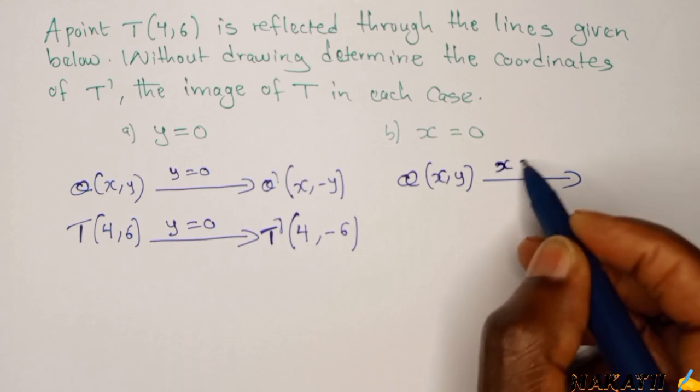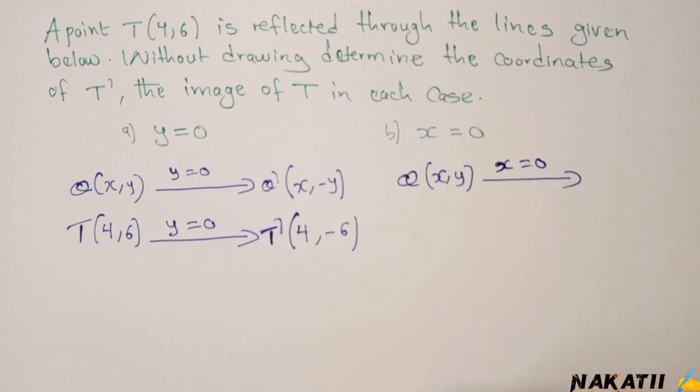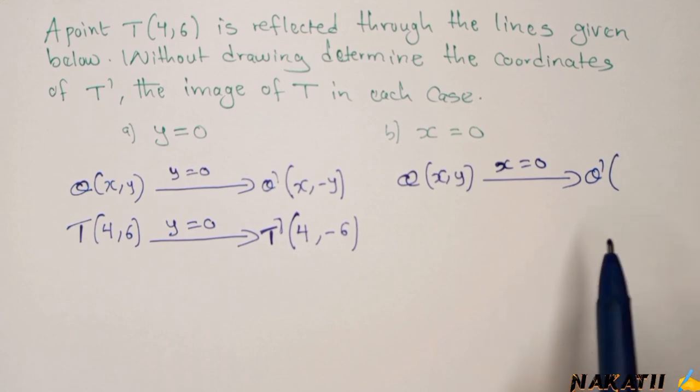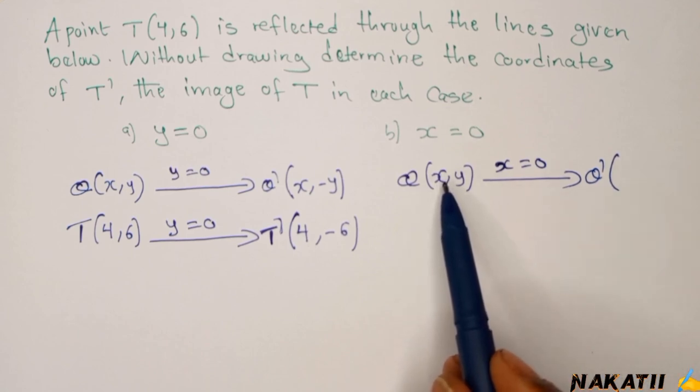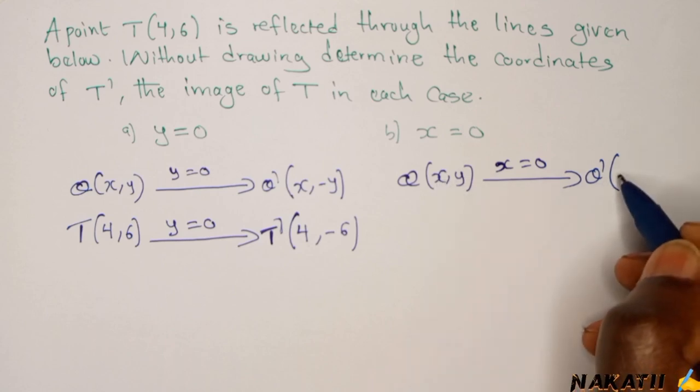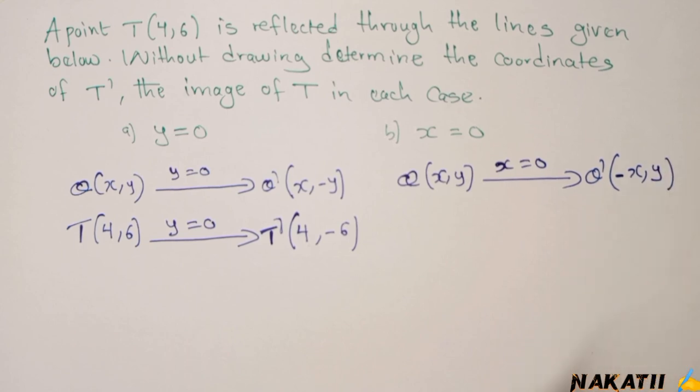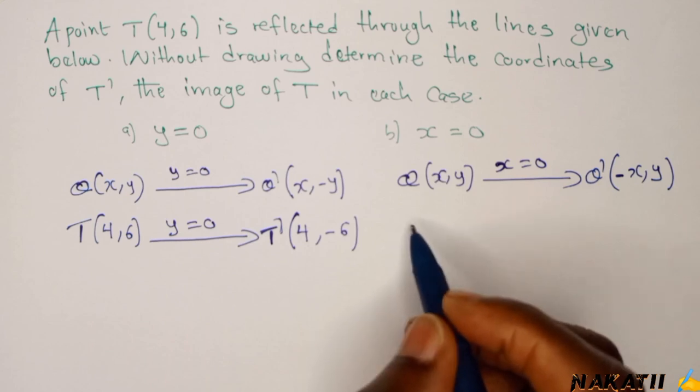x equals 0, which is the y-axis, your Q prime will be, this time around you change the sign of x. So if it is positive it becomes negative. You'll have (-x, y), and then you retain y the way it is because y remains unchanged.